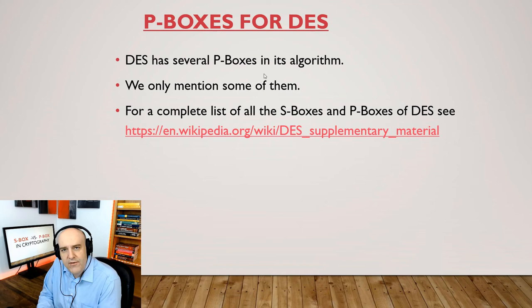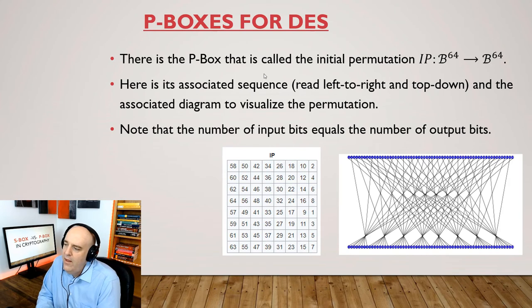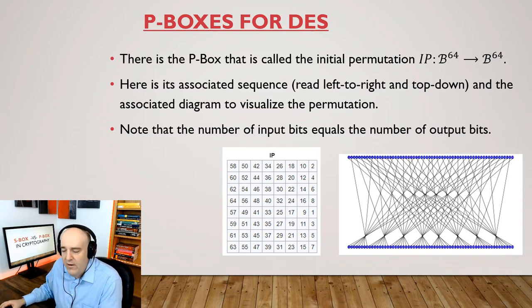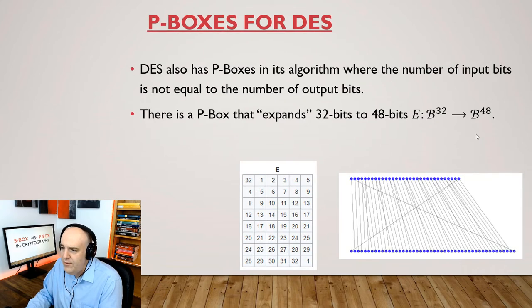Now let's look at the P-Boxes for DES. It actually has several P-Boxes in its algorithm. We're only going to mention some of them. If you want to look at all of them, you can take a look at this Wiki article here. Why don't we look at one of the P-Boxes in DES called the Initial Permutation. That goes from the set of 64 bits to the set of 64 bits. And we can describe that either by a diagram or a table like we saw before. In this table, just read that from left to right and top to down. And here's a diagram. It looks kind of overwhelming, but maybe the table is easier to reference. So notice that the number of input bits equals the number of output bits for this P-Box.